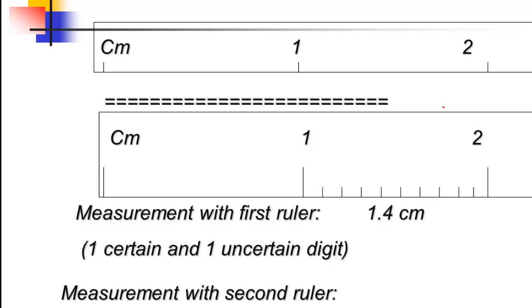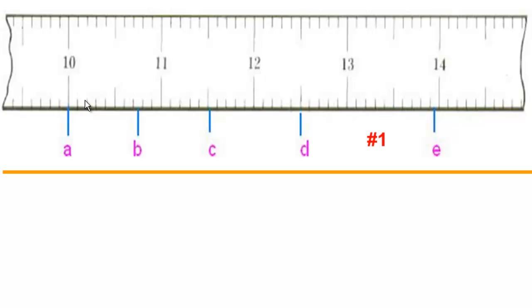We are doing the same length measurement but using two different tools. The second ruler is more precise because it has more subdivisions — one-tenth of a centimeter — allowing us to reach the hundredths place. All measurements have one uncertain digit, always the furthest to the right, and that digit can be zero. Now look at the next PowerPoint slide showing measurements A, B, C, D, and E. Go ahead and pause this video, write down those measurements, then play back to check your answers.